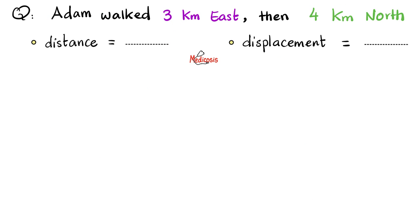How about this question? Adam walked 3 kilometers east, then 4 kilometers north. Please find the distance and the displacement. You'll find the answer key in the next video, where we'll learn about splitting a vector into its two components, and cover addition, subtraction, and multiplication of vectors.